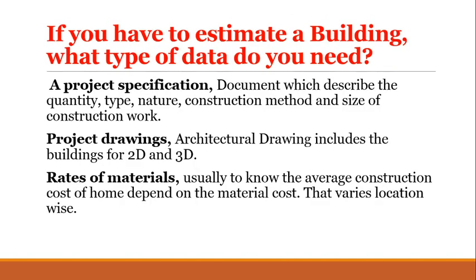If you have to estimate a building, what type of data do you need? A project specification document which describes the quantity, type, nature, construction method and size of construction work. Project drawings — architectural drawings include the building in 2D and 3D. Rates of materials — the average construction cost of a home depends on material cost, which varies location-wise.